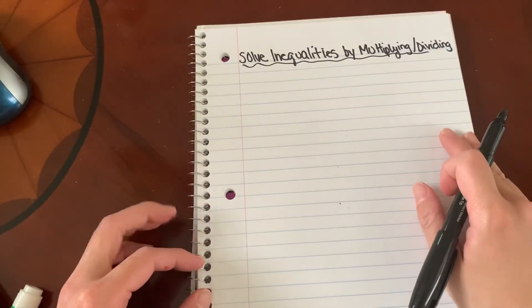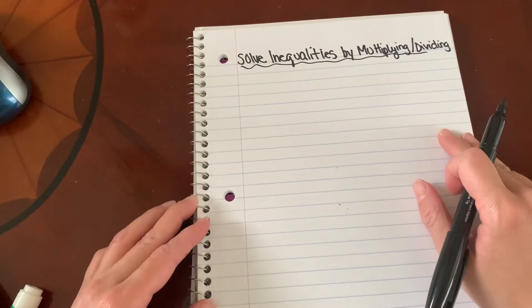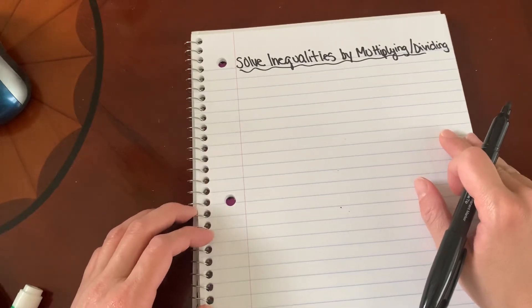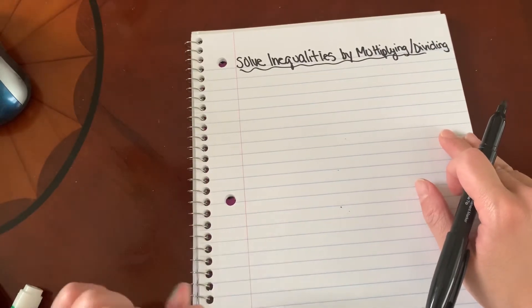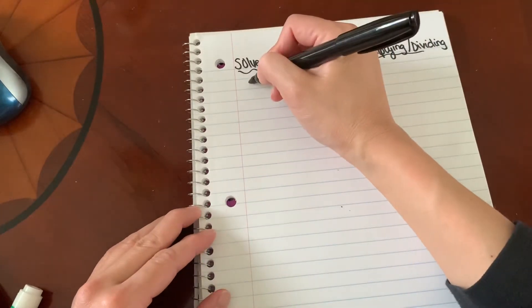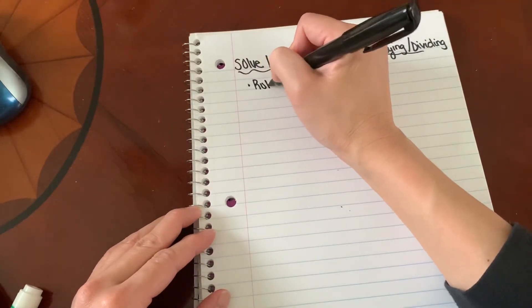When we solve inequalities by multiplying and dividing, it is very similar to solving equations. We multiply or divide, except there is one small difference. I'm going to share with you two rules.